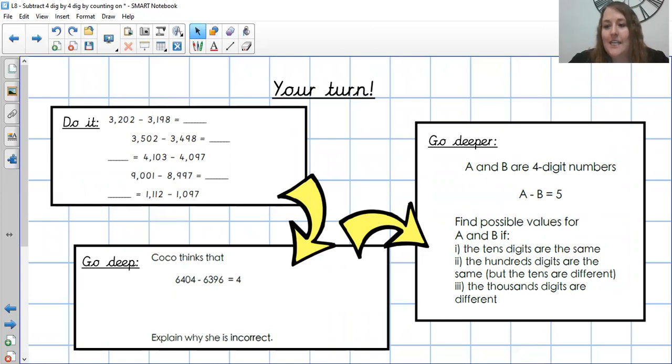You'll go deeper task today. We are imagining that the letters A and B are four-digit numbers, any four-digit numbers you want them to be. But the first four-digit number, so A, take away the second four-digit number, B, is equal to five. So we need to find two four-digit numbers that have a difference of five. And then it says, can you find possible values for them if the tens-digit number in both of them are the same? The hundreds-digit are the same, but the tens are different. And then the thousands-digit are different. There's a few ways to answer that problem. Pause me now and go and have a go, and I wish you luck with that. And then just come back for our learning pit slide.